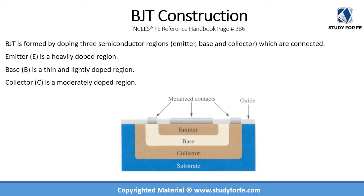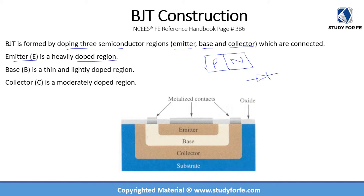BJT construction. We've so far looked at a diode, which is in many ways the simplest electronic device. It contains a p-type region in contact with an n-type region, forming a junction diode. A BJT is formed by doping three semiconductor regions called the emitter, base, and collector. The emitter is the heavily doped region, the base is a thin and lightly doped region, and the collector is a moderately doped region. There is a base-emitter junction and a base-collector junction.